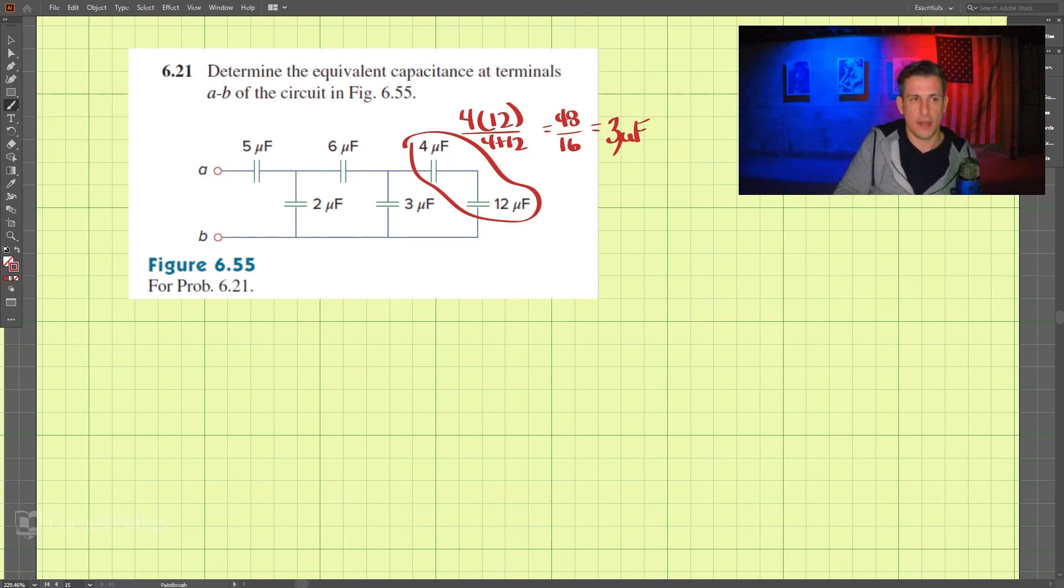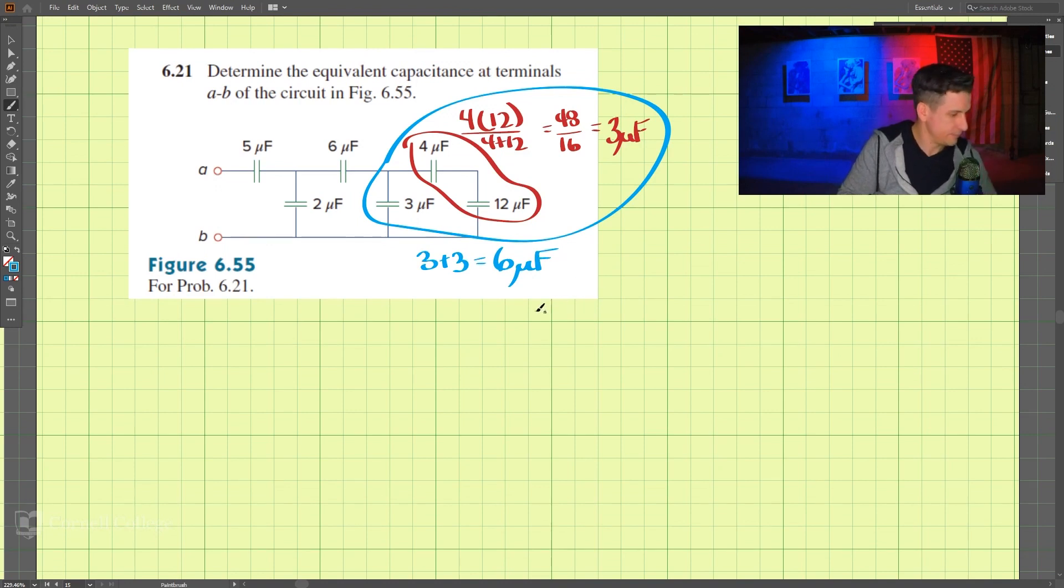And then that will be in parallel with this capacitor. So those will be in parallel. So we have 3 plus 3, and that should equal 6 microfarads.